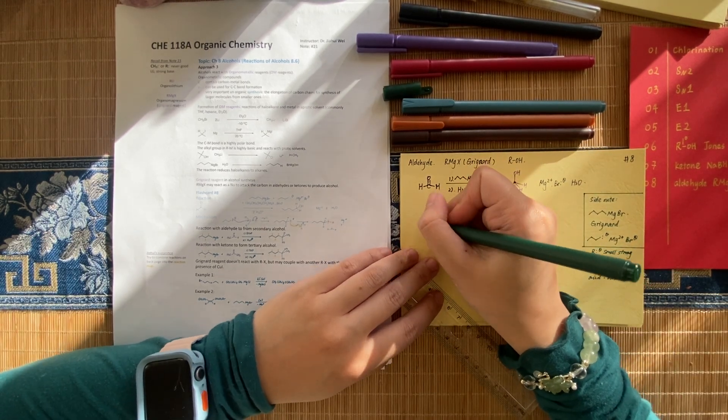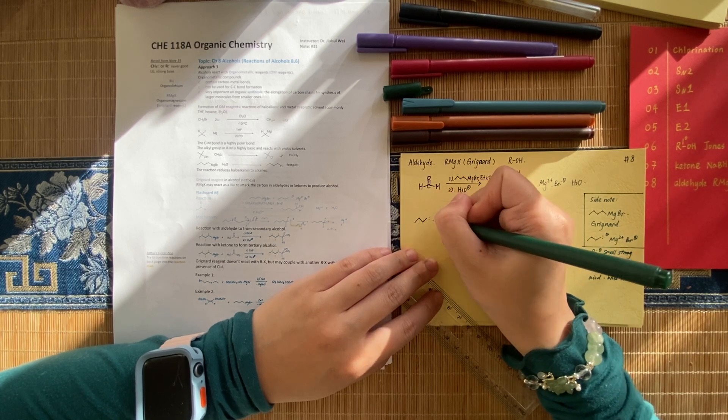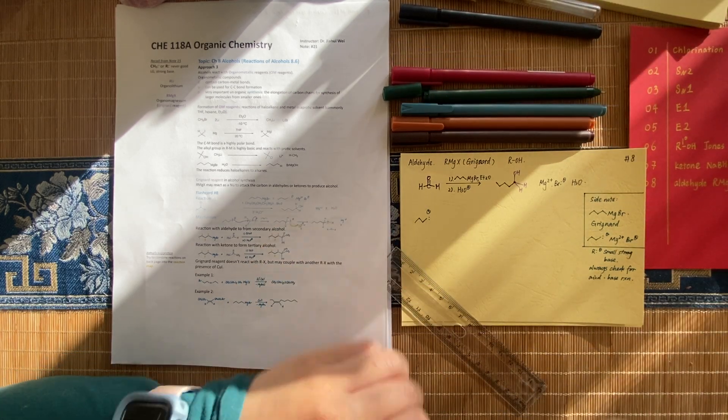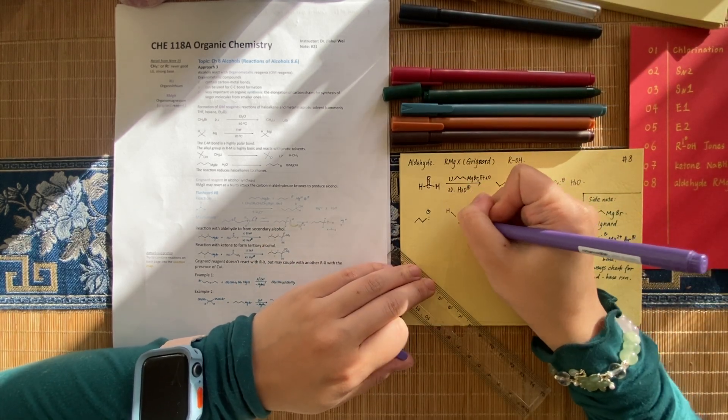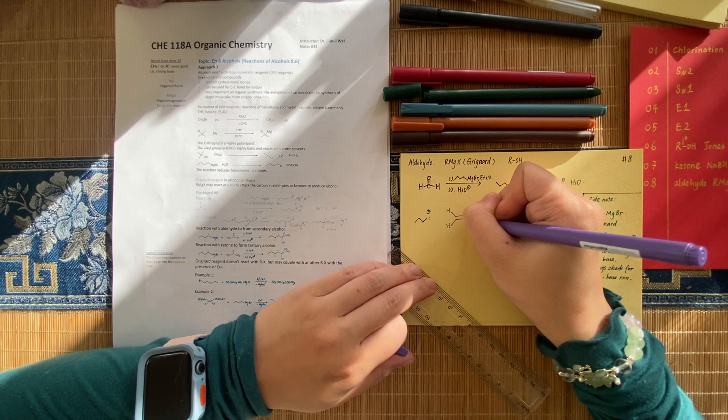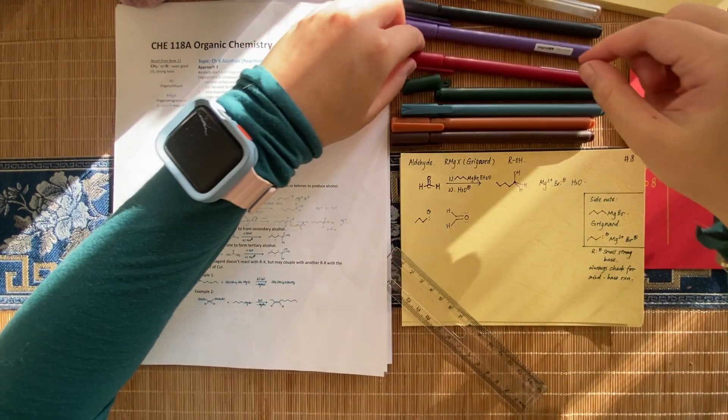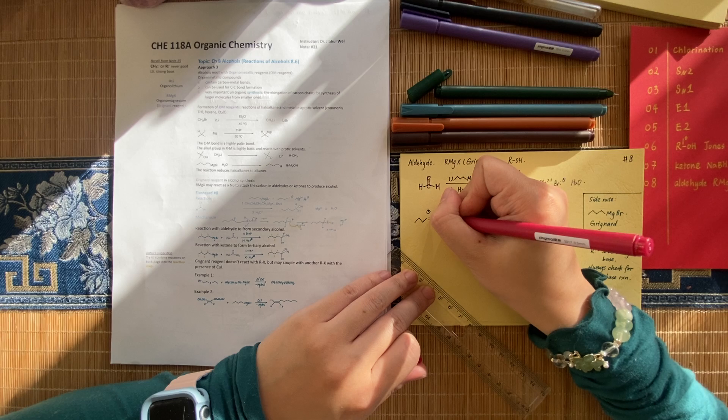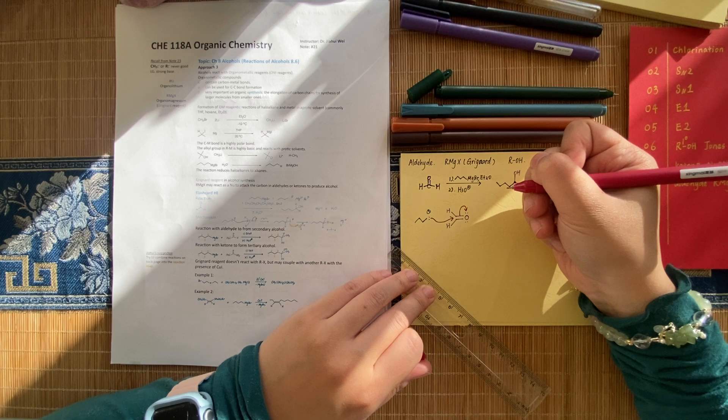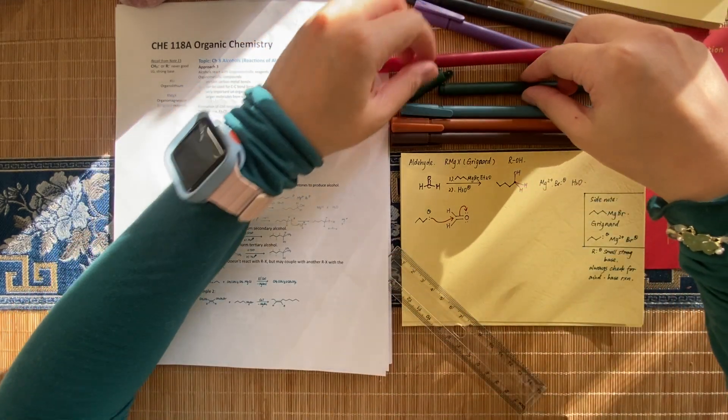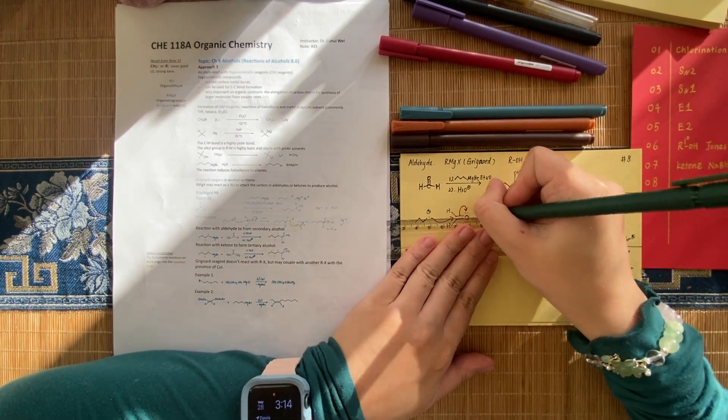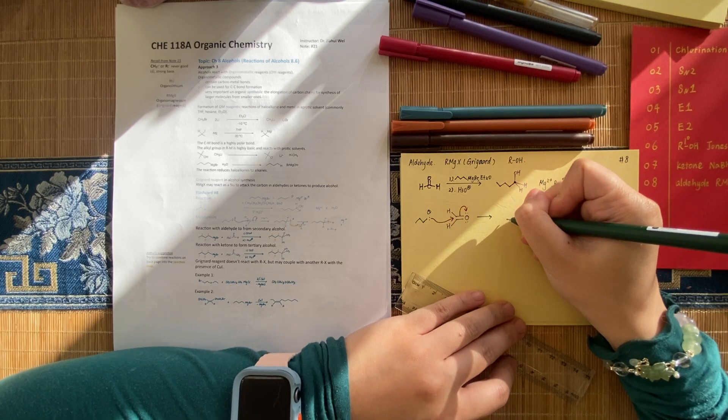All right. Let's do the mechanism. People just don't spend too much time on those. Just write the mechanism. We are doing this. And then let's do the attraction.